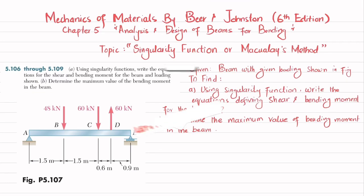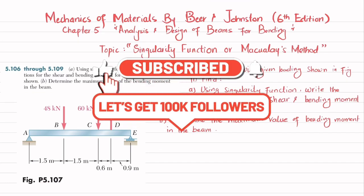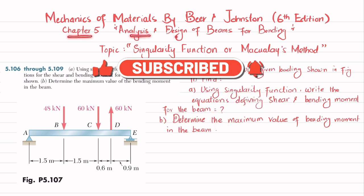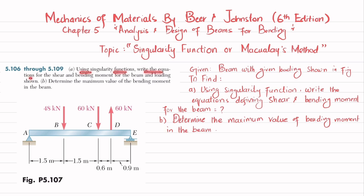Welcome back. Problem 5.107, taken from Chapter 5 - Analysis and Design of Beam for Bending - from the book Mechanics of Materials by Beer and Johnston, 6th edition. The topic is singularity functions, or Macaulay's method. In part A, we have been asked to use singularity functions to write the equation for shear and bending moment for the beam and loading shown.